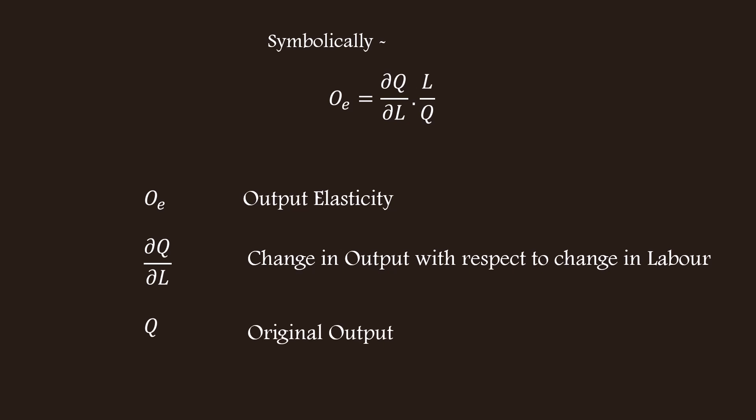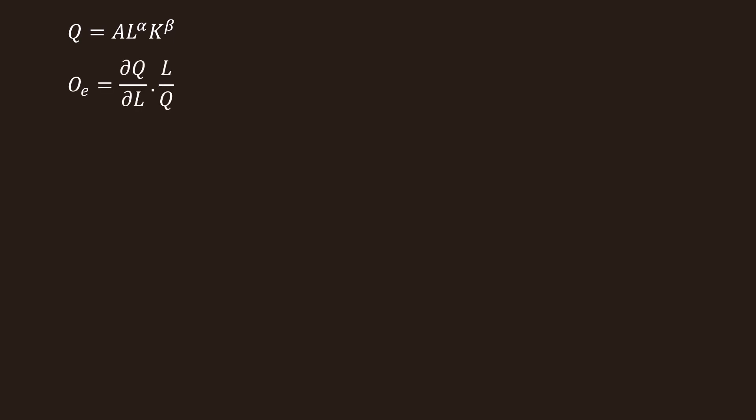Q represents the original output and L represents the original quantity of labor. It is time for us to find out elasticity with respect to labor. State the function: Q equal to A L^alpha K^beta. State the formula: QE equal to (dQ/dL) multiplied by (L/Q). Let us calculate the elasticity of output with respect to labor.